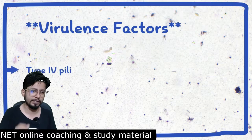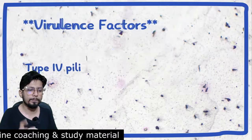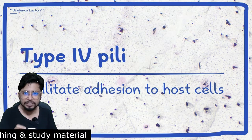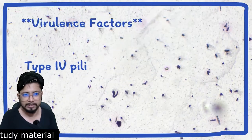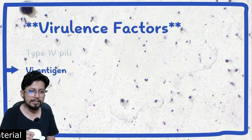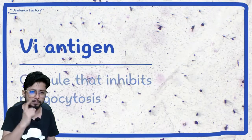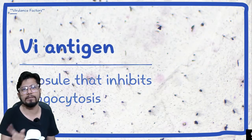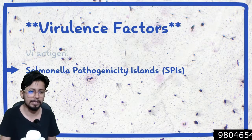The virulence factors released by Salmonella typhi include: first, Type 4 pili, which facilitates adhesion or attachment of Salmonella typhi to the host cell. The second factor is the Vi antigen, a capsule that inhibits the phagocytosis process.